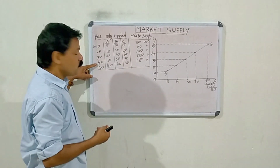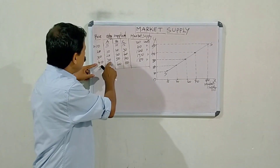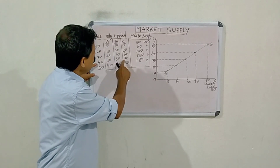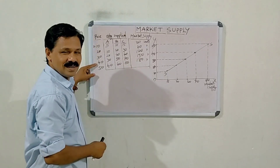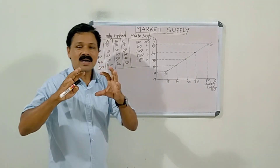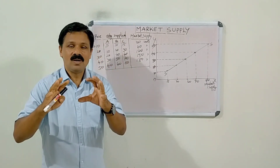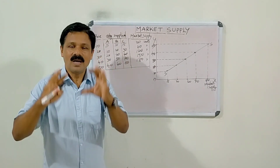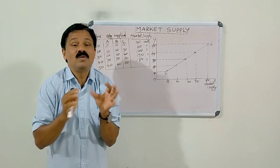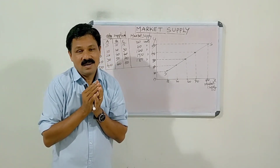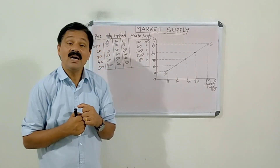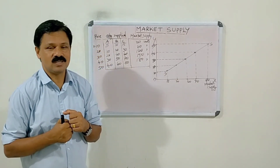Again, if price rises, the quantity offered for sale will also rise: 30 plus 50 plus 70 is equal to 150. In short, the market supply schedule shows the summation of the individual quantities which is offered by the sellers.